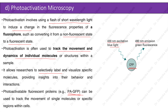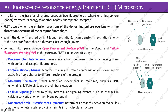Fluorescence Resonance Energy Transfer, or FRET Microscopy, relies on the transfer of energy between two fluorophores, where one fluorophore — the donor — transfers its energy to another nearby fluorophore known as the acceptor. FRET occurs when the emission spectrum of the donor fluorophore overlaps with the absorption spectrum of the acceptor. When the donor is excited by light, it can transfer its excitation energy to the acceptor fluorophore.